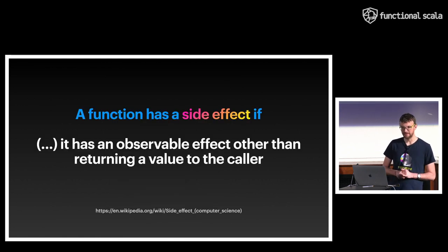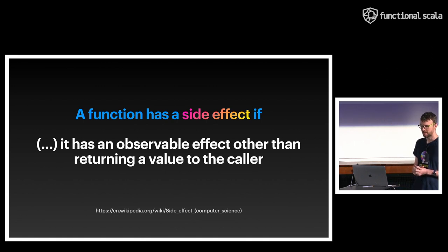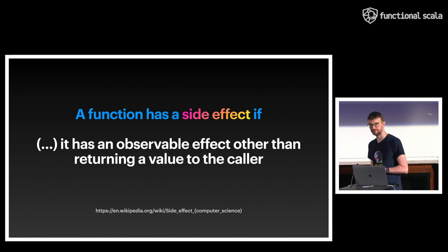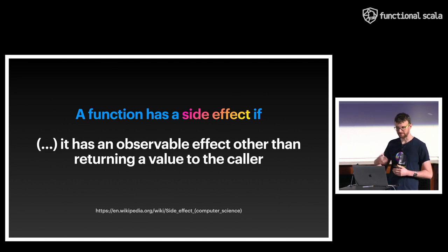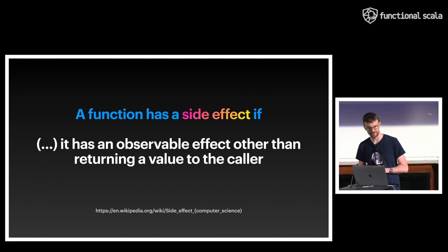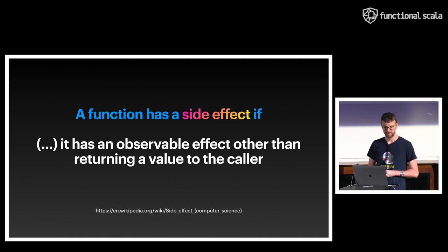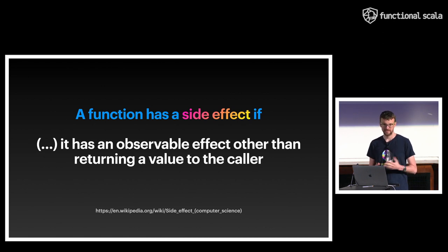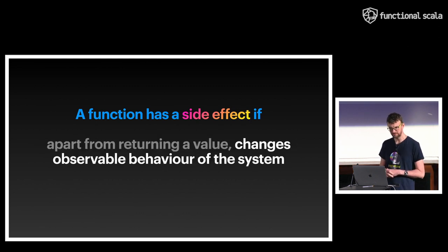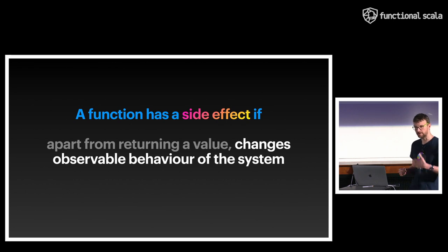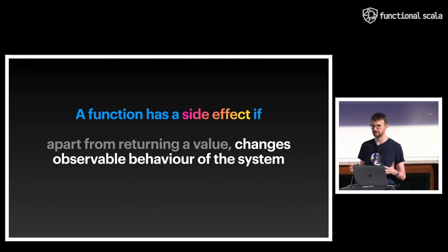Let's look at the definition of what an effect is. If we go to Wikipedia, we can see that a function has a side effect if it has an observable effect other than returning a value to the caller. That definition is okay-ish — one problem I have with it is that it's kind of recursive, because it says that the function has a side effect if it has an effect. So an effect is not defined in Wikipedia — that's not the best definition.